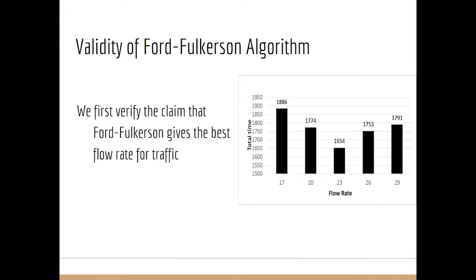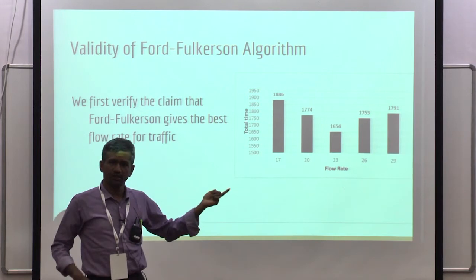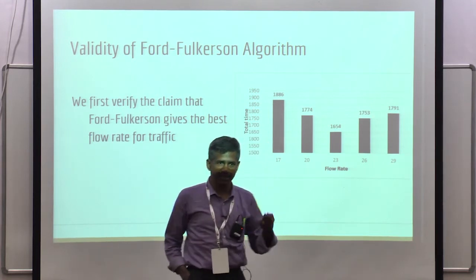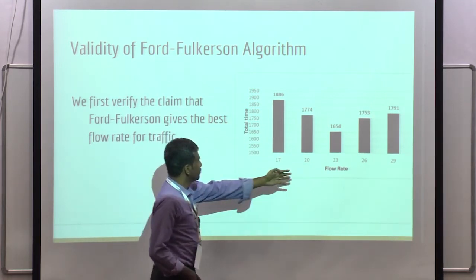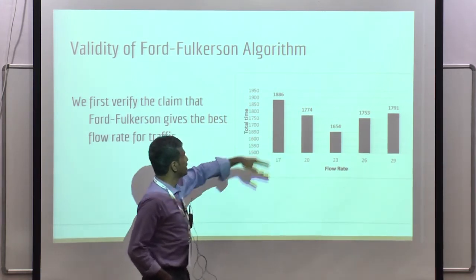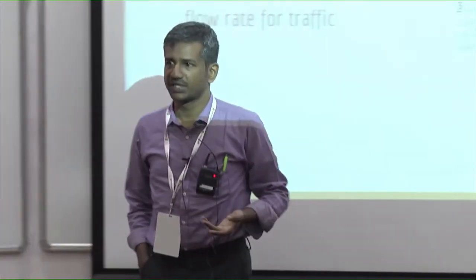Our first step is to verify that Ford-Fulkerson is indeed the best approach. For the graph we used, Ford-Fulkerson gives a flow rate of 23 — that is, 23 vehicles per time step should be sent out. We then tested what happens if we send more vehicles or fewer vehicles. In both cases, the total travel time increases significantly. So deviating in the number of vehicles from the Ford-Fulkerson solution hurts overall performance.